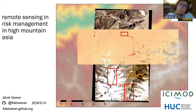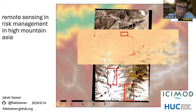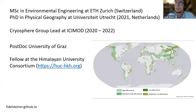My affiliation is with the University of Graz where I'm a postdoc fellow in Austria. I'm also a fellow at the Himalayan University Consortium — a network of universities in High Mountain Asia spanning from Afghanistan all the way to Bangladesh and Myanmar, including universities outside the region. We do a lot of coordination in the academic field. Briefly, I did my master's in environmental engineering at ETH Zurich.